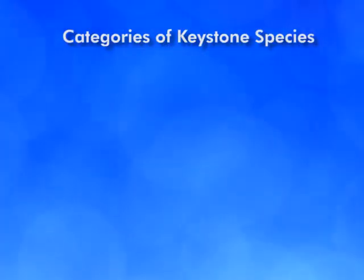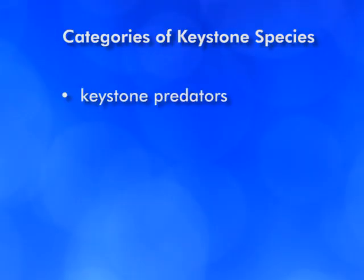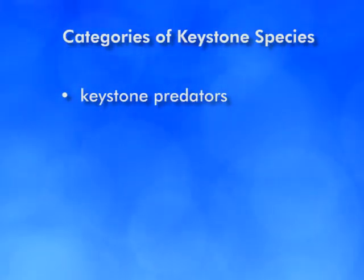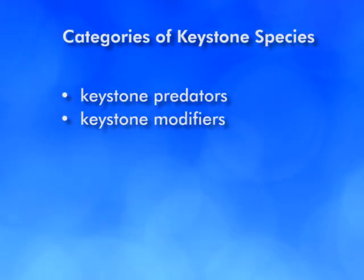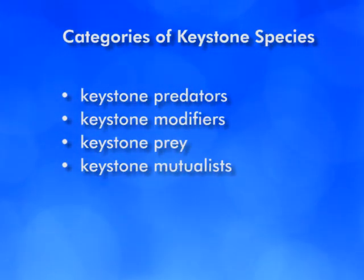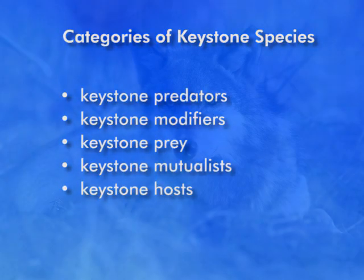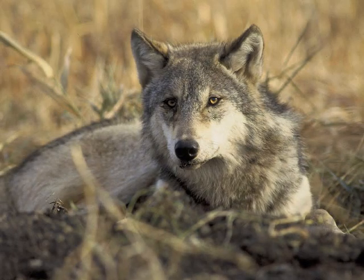There are five generally recognized categories of keystone species: keystone predators, modifiers, prey, mutualists, and hosts.